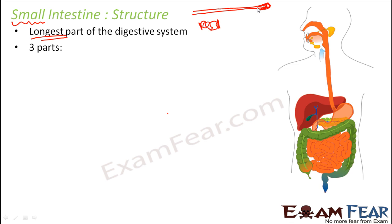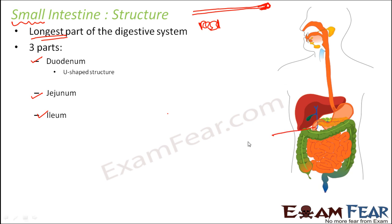The small intestine is divided into three parts: duodenum, jejunum and ileum. Duodenum is a U-shaped structure and is the first part of the small intestine. The food from the stomach reaches the duodenum first. It is the shortest region of the small intestine, somewhere around 10 inches in length.